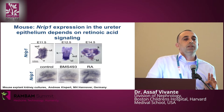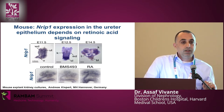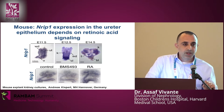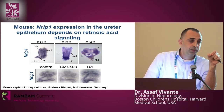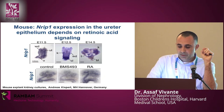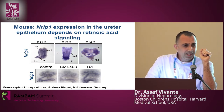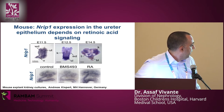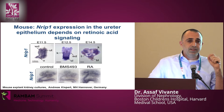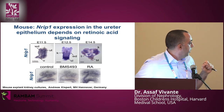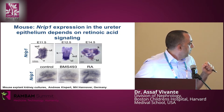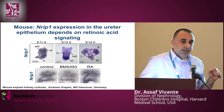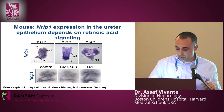Our next step was to look at NRIP1 expression in mouse kidney development, done in collaboration with Andras Kispert from Germany. NRIP1 showed specific expression in the lower urinary tract collecting ducts and urinary epithelium, peaking at embryonic day 14.5. In the lower panel, kidney explant cultures treated with retinoic acid showed overexpression of NRIP1, while blockage with the retinoic acid antagonist BMS493 resulted in a lack of NRIP1 expression.